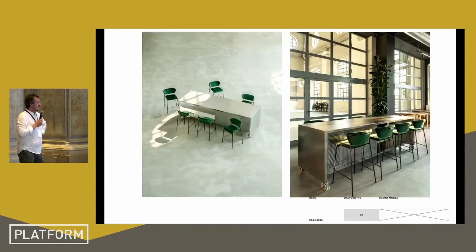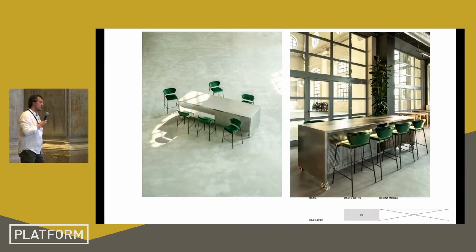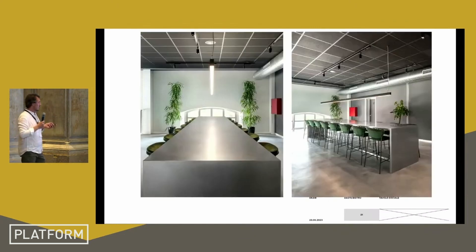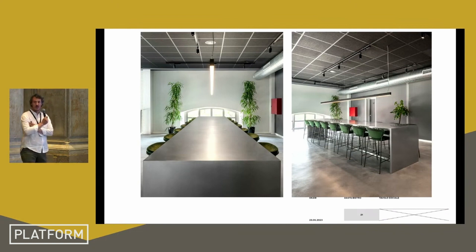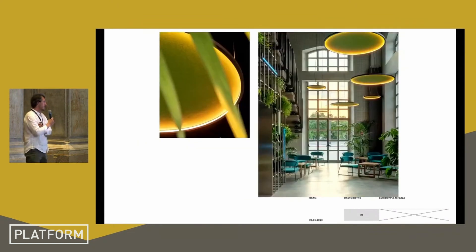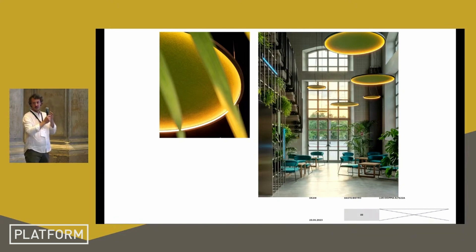Another element is the mobile kitchen — a versatile object that can be used for show cooking, as a shared table, or as a counter for a DJ set. The common table is one large table with a steel structure where there is no separation between different customers. And the last element is the iconic light, hanging from the ceiling, which characterizes the double-height space.